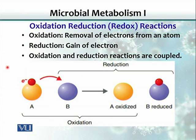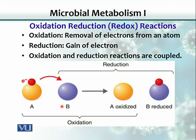Another key concept is oxidation-reduction reactions. Oxidation is the removal of electrons from an atom, and reduction is the gain of electrons. These two always occur together and are coupled — one substance donates electrons and another gains them — forming what is called a redox couple or redox reaction.